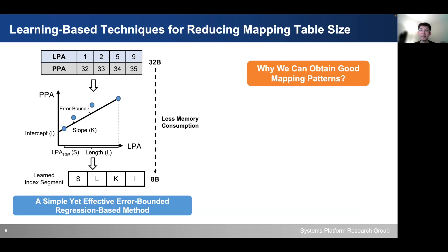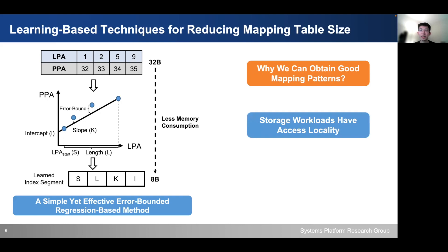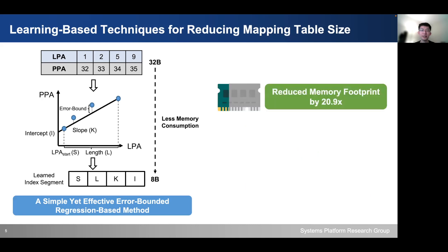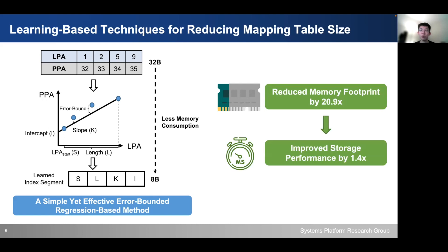The reason we can obtain such good mapping table patterns is the following. First, the storage workload typically demonstrates good spatial locality. Second, there exists a write buffer inside SSD, which groups multiple flash pages together before they are flushed to the back-end flash media, and that helps us to identify better mapping table patterns. Based on our study, we can reduce the memory footprint by 20.9 times on average, and the saved memory can also benefit the data cache size, improving storage performance by 1.4 times.